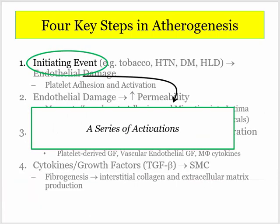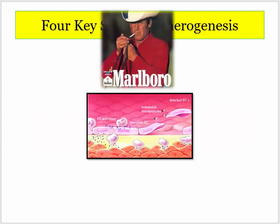Atherogenesis will be presented in four quick steps. You can think about the process as a series of activations all triggered by inciting factors that damage the vascular endothelium. Here is what it looks like.